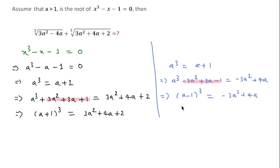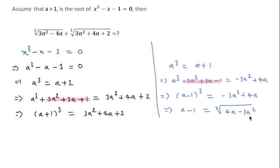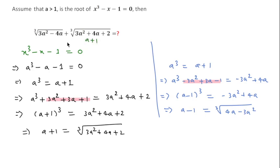Taking the cube root of both sides: a + 1 = cube root of (3a² + 4a + 2) and a - 1 = cube root of (-3a² + 4a). Substituting the value of (a + 1) and (a - 1) into the expression, the 1's cancel and we get 2a. This is the answer. Thanks for watching.